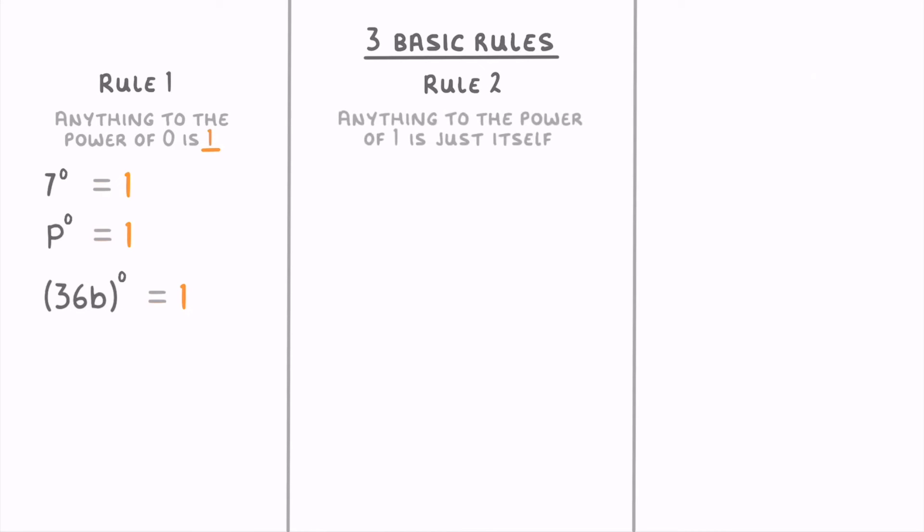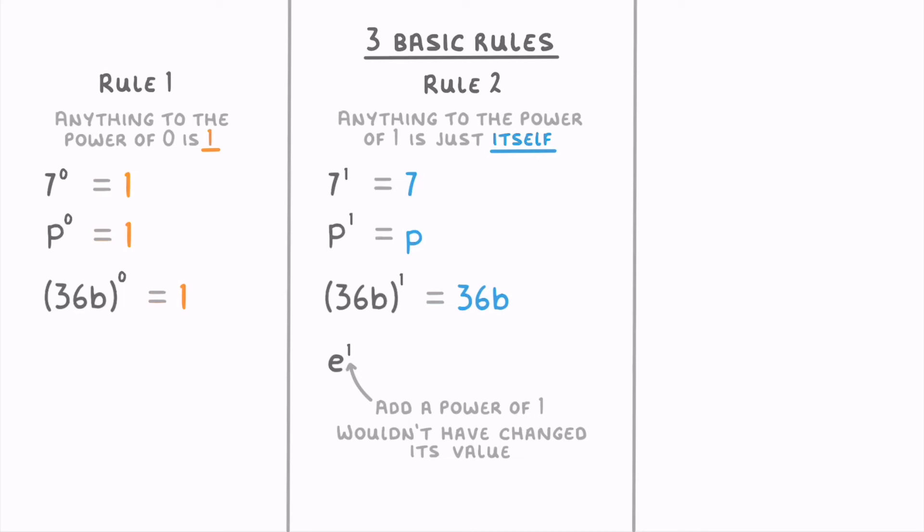The second rule is that anything to the power of 1 is just itself. So 7 to the power of 1 is just 7, p to the power of 1 is just p, and 36b to the power of 1 would be 36b. This also means that if you had a term like e, you could add a power of 1 to the corner if you wanted to and it wouldn't have changed its value at all, because e is exactly the same thing as e to the power of 1.